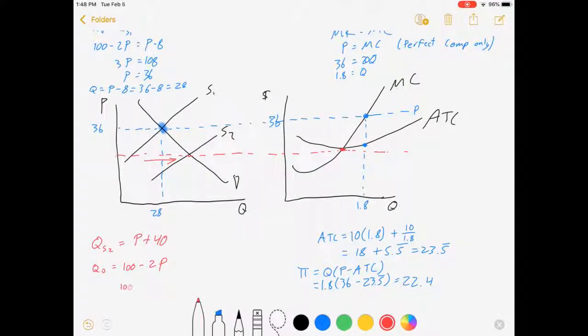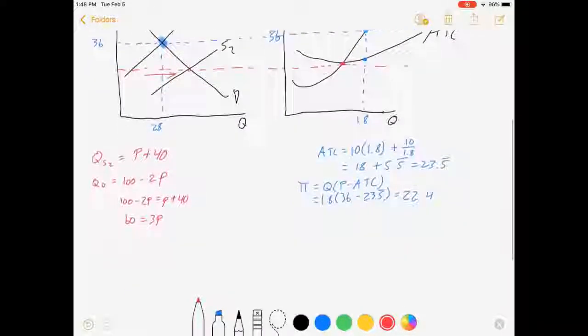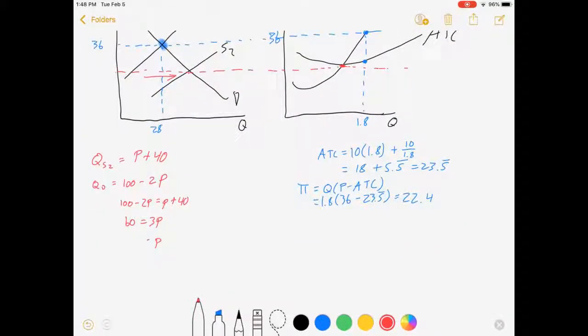Let's see, 100 minus 2P equals P plus 40. 60 equals 3P. P equals 20. Get our market Q out of that. 20 plus 40 is 60. All right, so supply has increased. More firms have entered and price has fallen.